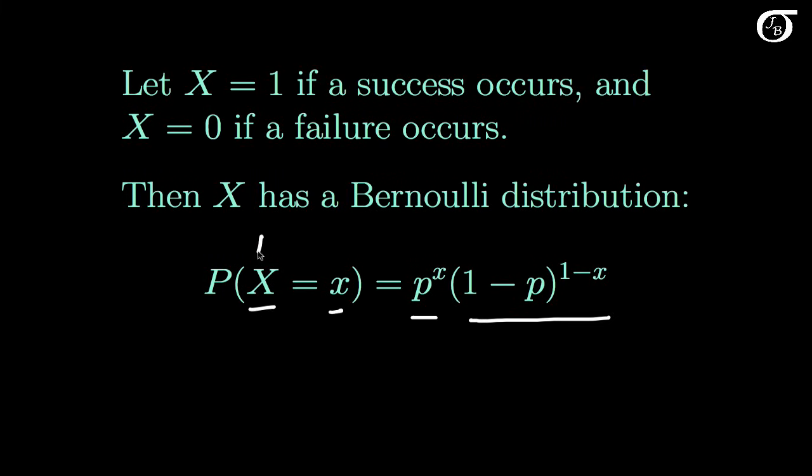We sometimes write this as just little p of x. You might see it written that way sometimes. Now what we should do is say what values x can take on, and so we write here for little x being equal to 0 or 1. And so all of this we refer to sometimes as the probability mass function of the Bernoulli distribution.